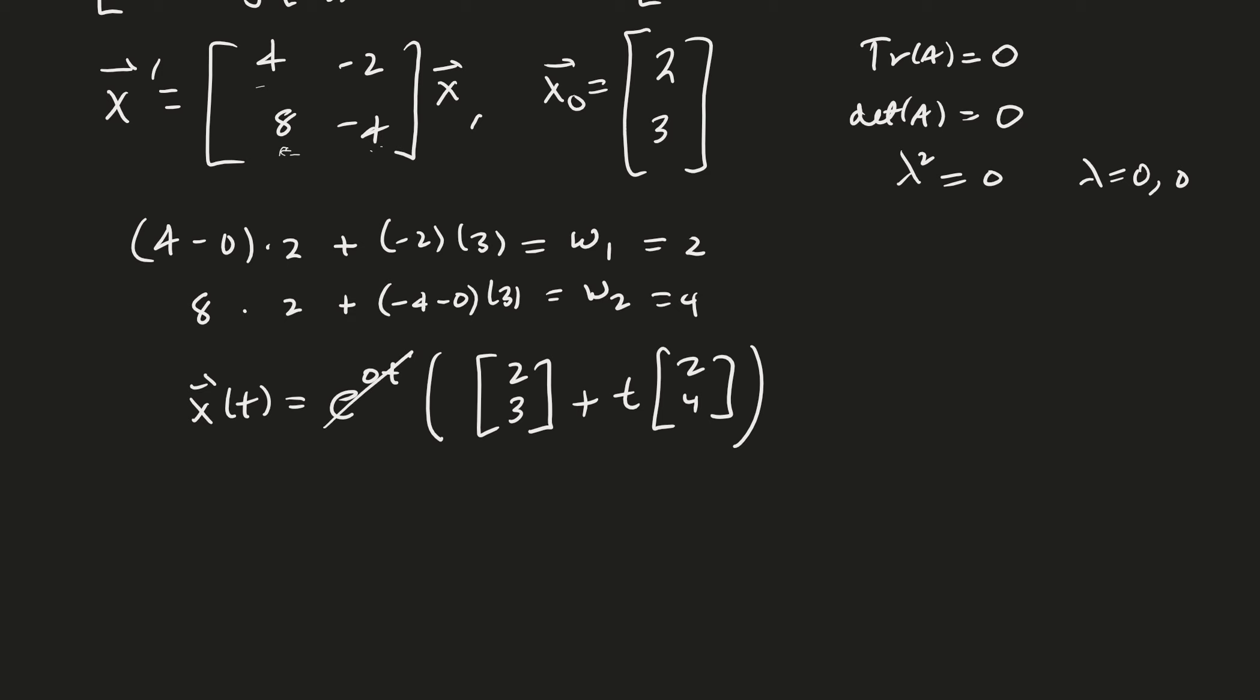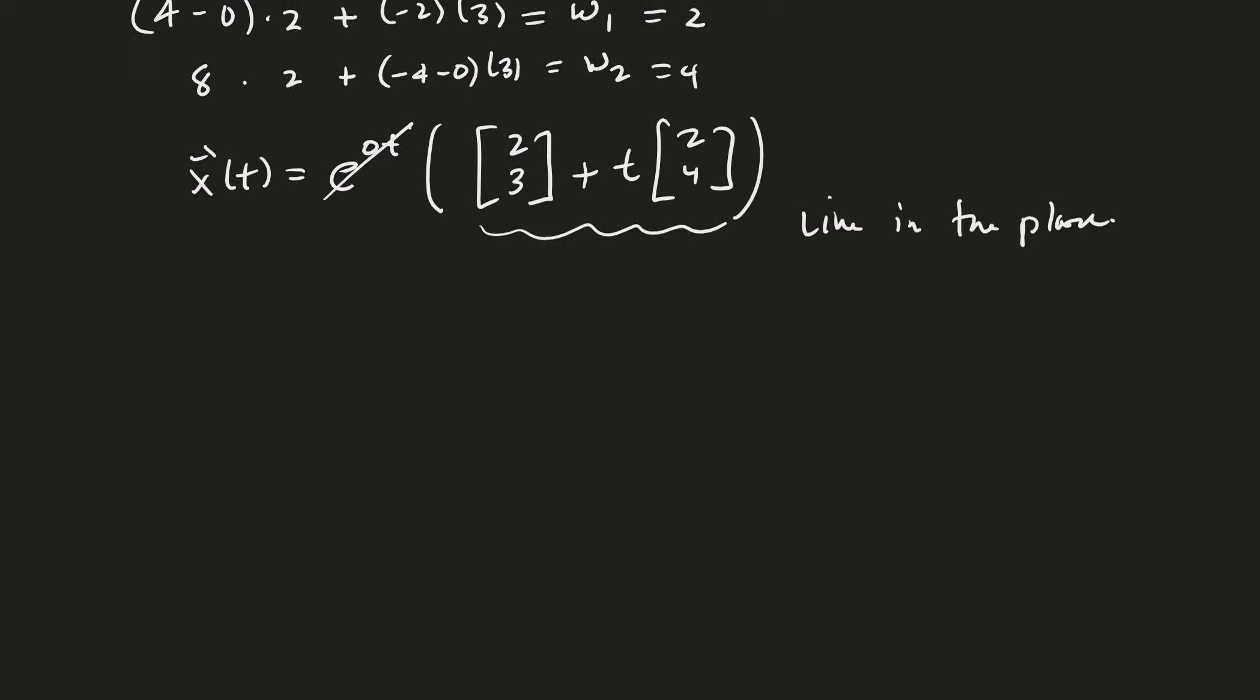And so, by the way, the e to the 0t is just going to be 1. And so, therefore, our solution is actually a line in the plane. Very good. Okay. So there really wasn't much to do today, except just to finish that off. And so let's go ahead and summarize now.